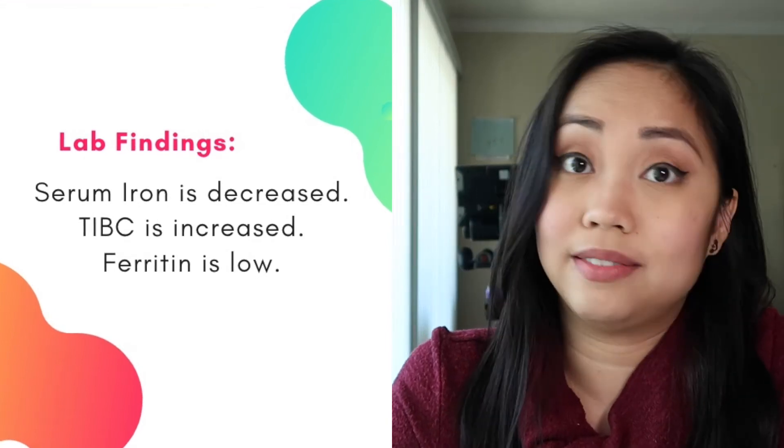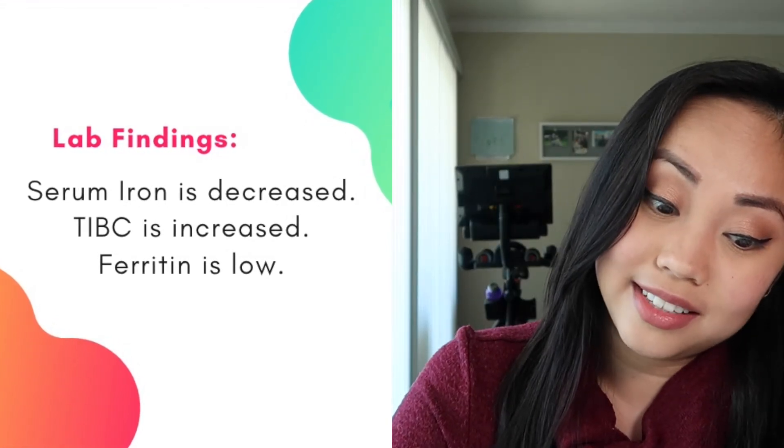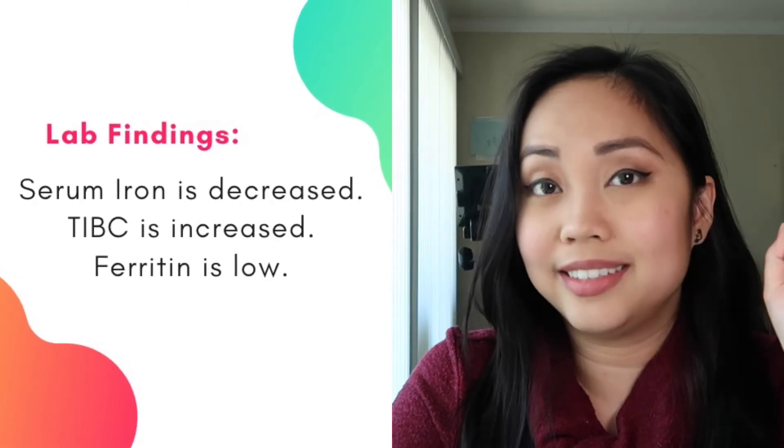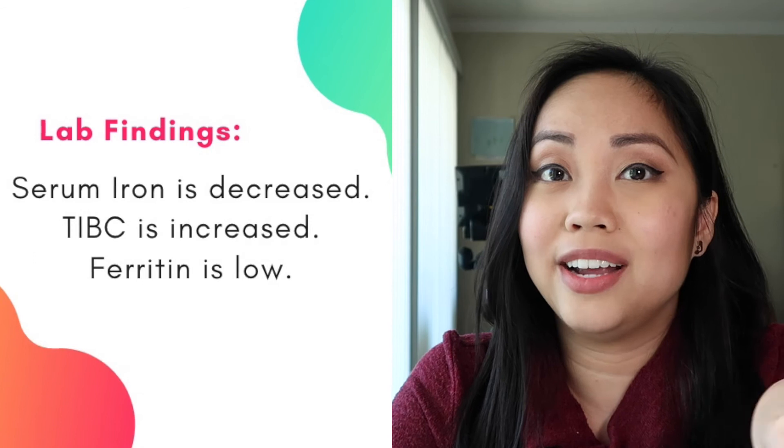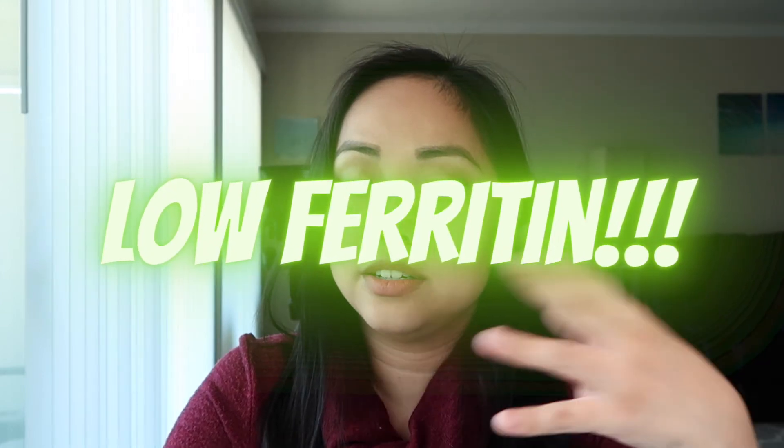For iron studies: serum iron is decreased — there's literally no iron, so serum iron is decreased. TIBC is up. Ferritin is low — no iron stores at all — and this is true for all stages of IDA; your stores are completely depleted. Having low ferritin is actually a telltale sign of iron deficiency anemia and helps you differentiate iron deficiency anemia from other hypochromic microcytic anemias.